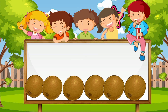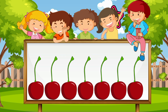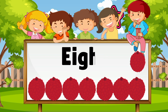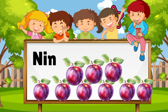7 SEVEN — 7 cherries. 8 EIGHT — 8 lychees. 9 NINE — 9 plums.